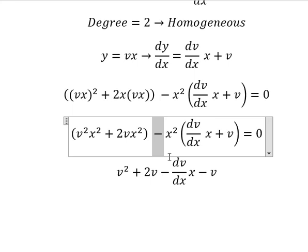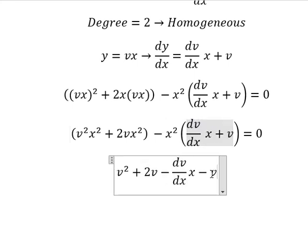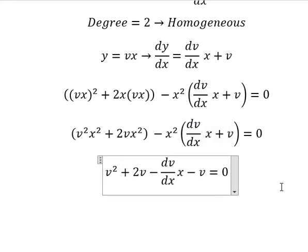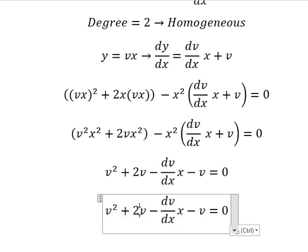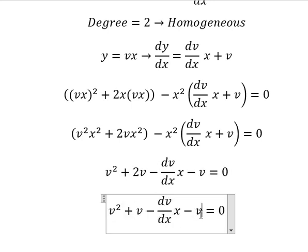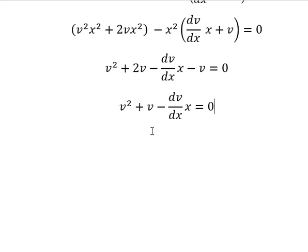We have the negative side, so we put the negative, we change the side of this one. So 2v minus v we call about v. Now we put this one go to the right.